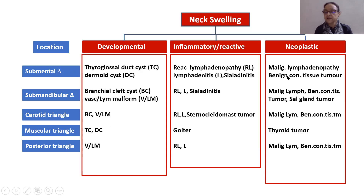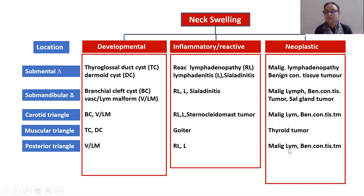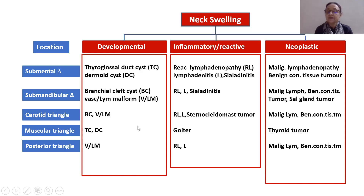Malignant lymphadenopathy and benign connective tissue tumours are present in almost all triangles of the neck. Thyroid tumour, goiter, thyroglossal cyst, and dermoid cyst are in the midline — these are the midline swellings.